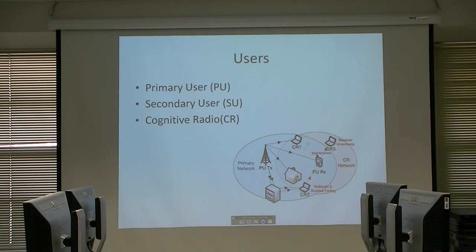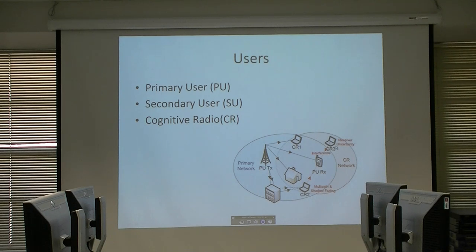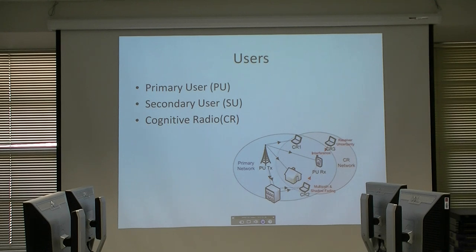In this picture you can see, for example, this is the primary user transmitter — the base station broadcasting on the network. You can see these four users receiving this information. We also have another network here — this is the cognitive radio. The users here we call secondary users. They use the holes in the spectrum and try to communicate in frequency bands not occupied by the primary user.